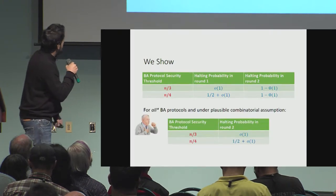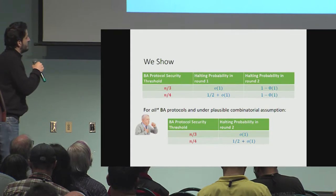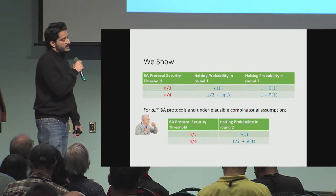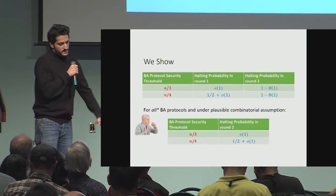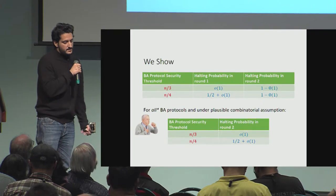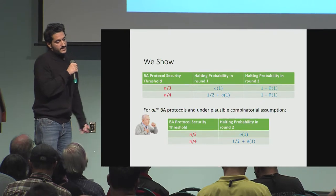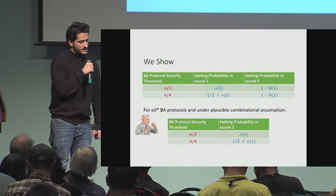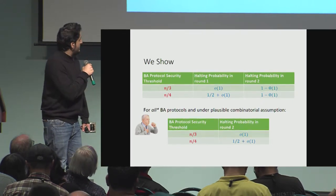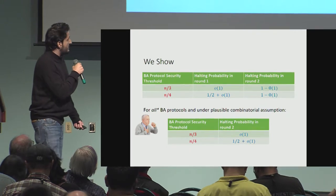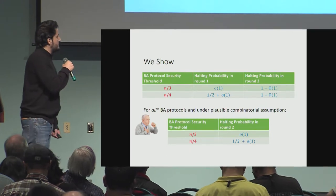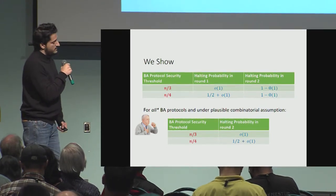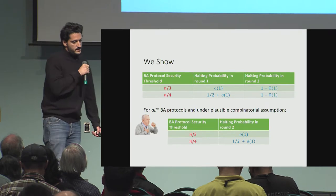In addition, we show that for most BA protocols and under some combinatorial assumption — a conjecture I'm not going to discuss — the halting probability is also vanishingly small after the second round.